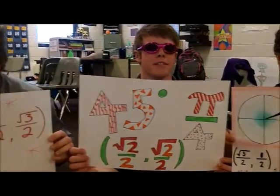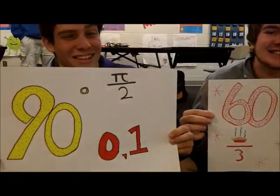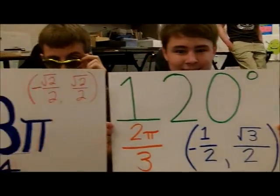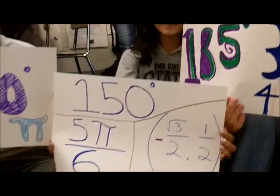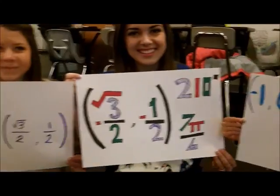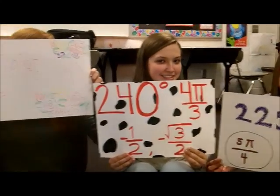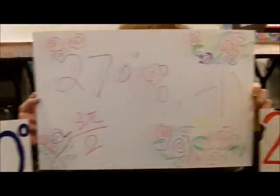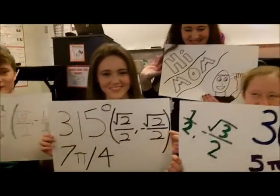We need the unit circle, only got five different numbers on it. Square root 3 over 2, square root 2 over 2, 0, 1 and 1 half. We need the unit circle, only got five different numbers on it. Square root 3 over 2, square root 2 over 2, 0, 1 and 1 half.